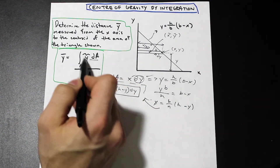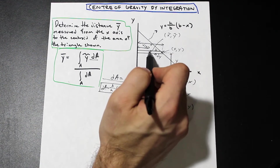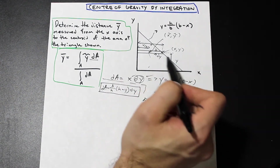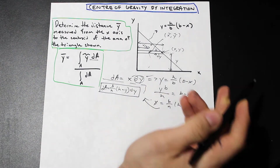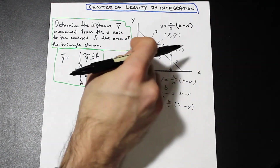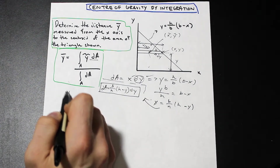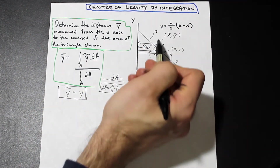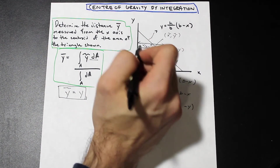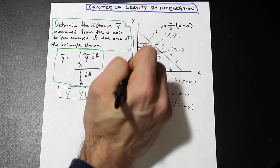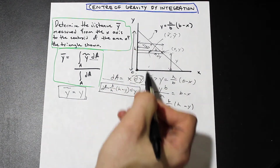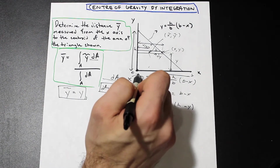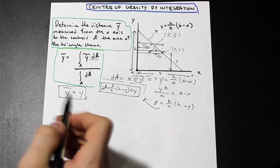Now we need to find y tilde, which is the y distance to the centroid of the moment arm of this differential rectangle. Because we're finding y bar and our differential rectangle is in the x direction, the distance to the centroid is simply y. So y tilde = y. Our bounds — because we're integrating in the y direction to find y bar — go from zero to h, the full vertical height of the triangle.